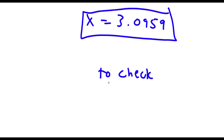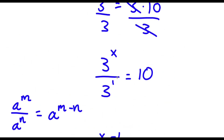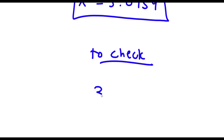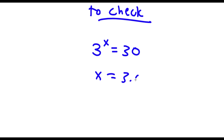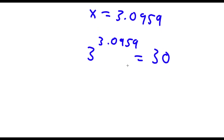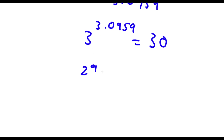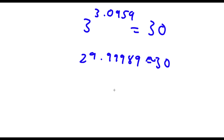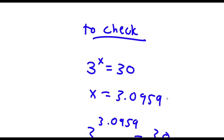Now to check — my original equation was 3 to the power of x is equal to 30. We know that x is equal to 3.0959. So plugging this in, I have 3 to the power of 3.0959 is equal to 30. Now 3 to the power of 3.0959 is equal to 29.9989, which is approximately 30. So 30 is equal to 30, meaning our solution is correct.